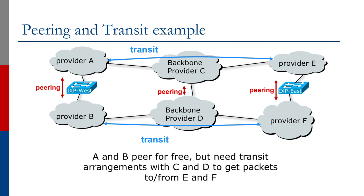In the middle are two large providers. C's customers include A and E, and D's customers include B and F. If these providers are of similar size, and so it's of equal benefit to them, they may peer with each other, exchanging traffic between all their customers' networks at no cost. So, for example, traffic from A to F may go through this peering link with no settlement between C and D.